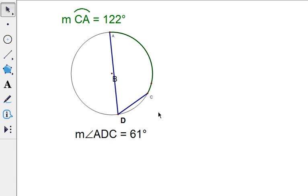I want you at home to look at this and see if you can come up with the relationship between the measure of what I have as the green arc, the intercepted arc, and the measure of the blue angle, which is the inscribed angle. Right now you can see there are two measures, and I'm going to move it around and see if you can see a relationship between the two.